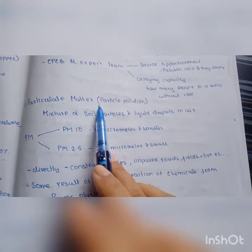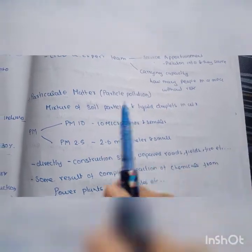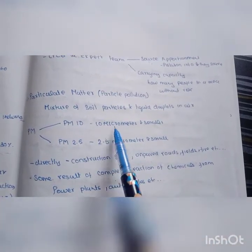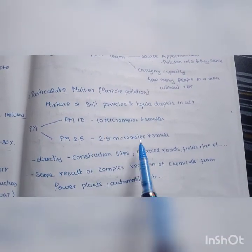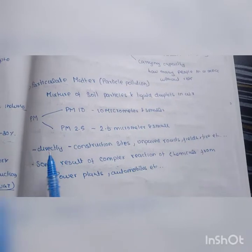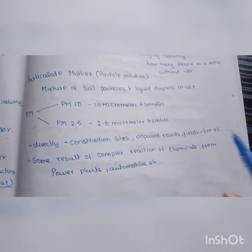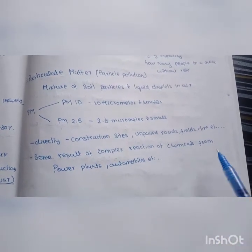Particulate matter is a mixture of solid particles and liquid droplets. These are two types: PM 2.5 and PM 10. PM 2.5 direct sources include construction sites, unpaved roads, fields, and fires. Other sources include chemical reactions.